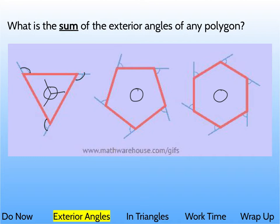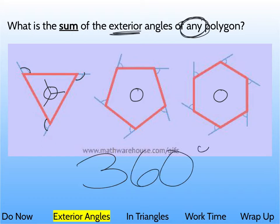So one thing here, it's not a formal proof, but the sum of the exterior angles of any polygon, no matter what, always add up to 360 degrees, no matter what.